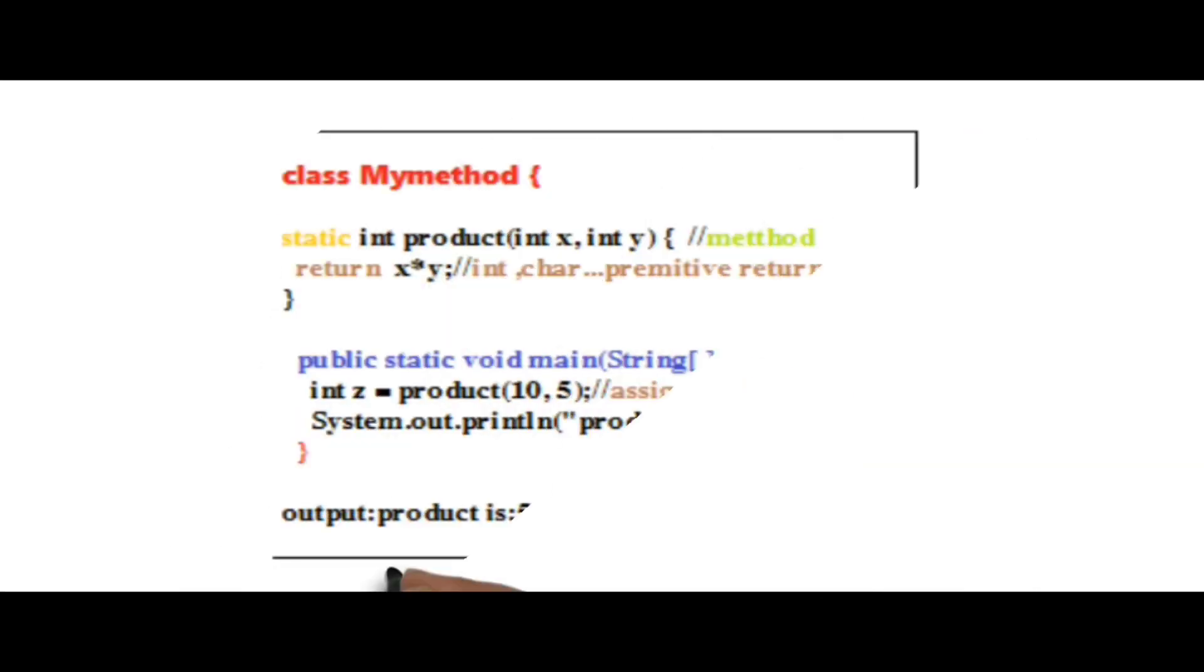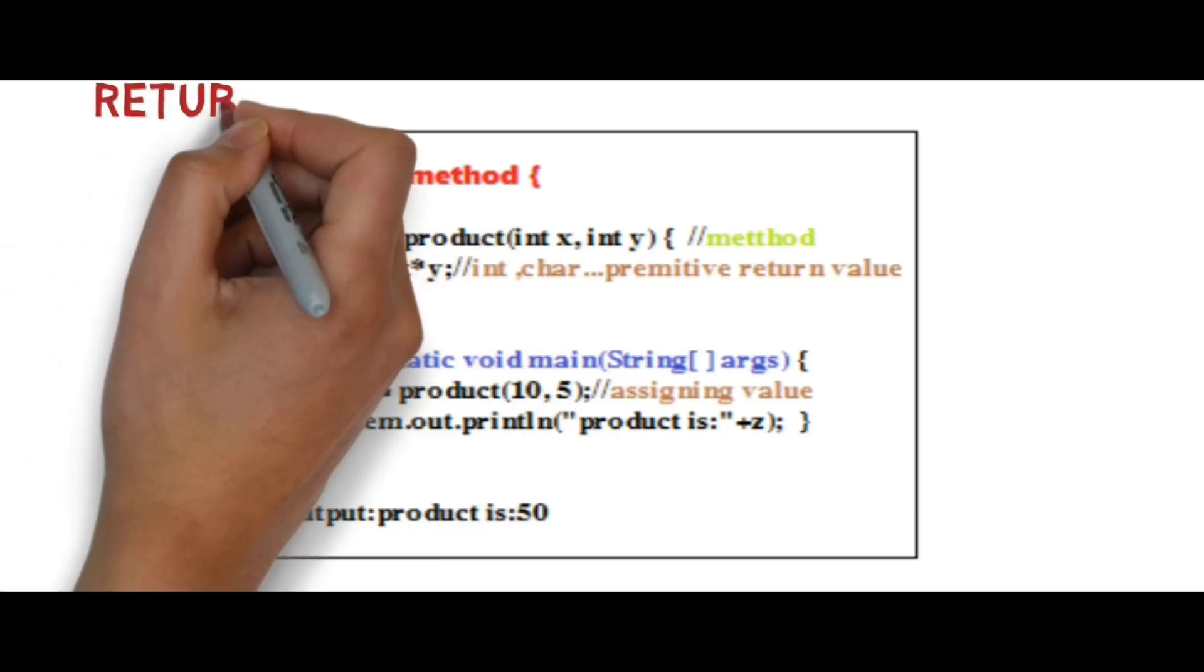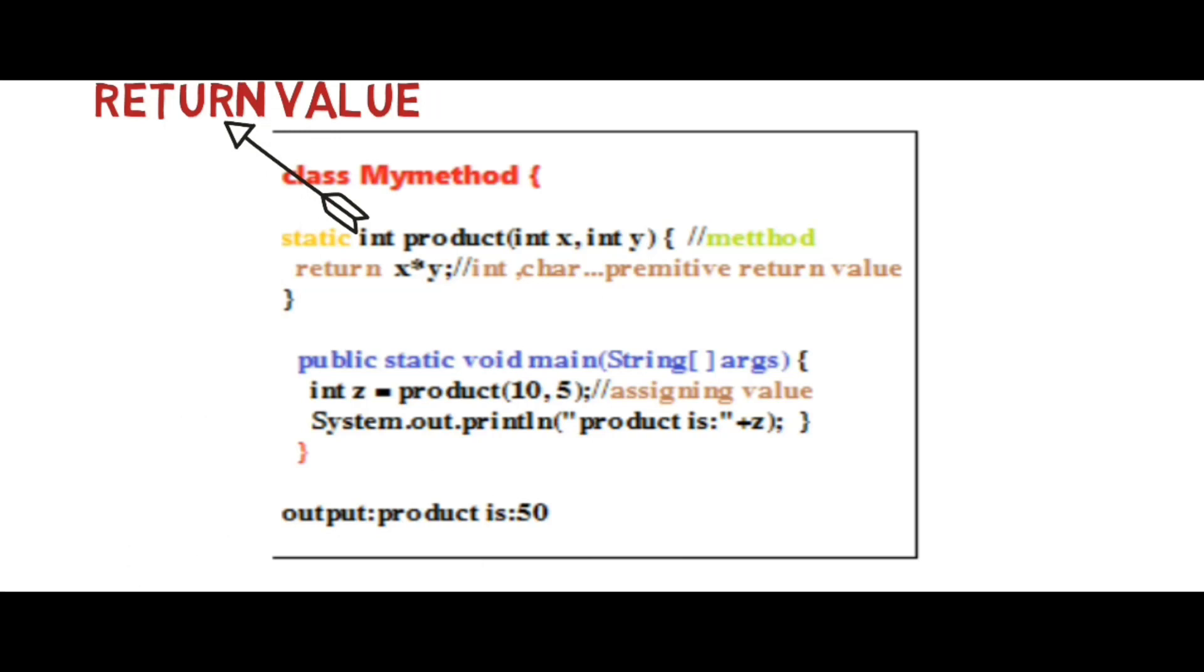Let us begin with the method return type. In the MyMethod class, static int product is the function, or we can say method. It is the return type, which means we have to return some value. All the primitive data types must return a value.